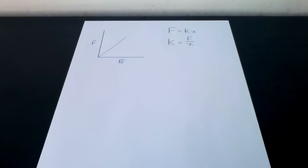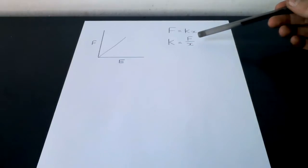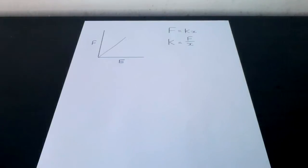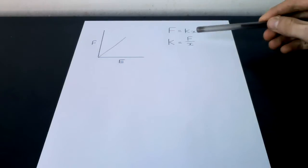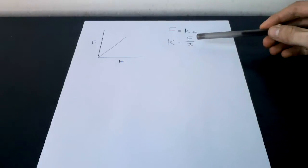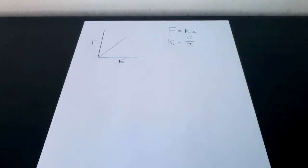The equation for Hooke's Law can be rearranged as K equals F over X. The spring constant is equal to the applied force, F, divided by the extension, X. The spring constant, K, is measured in newtons per meter to the minus one, because it is the force per unit extension.